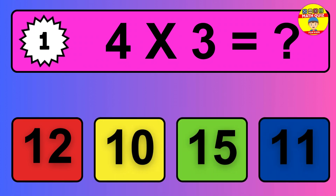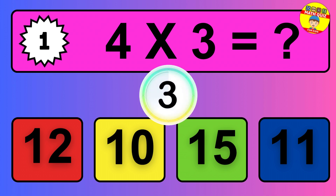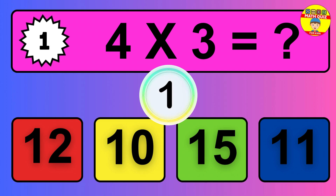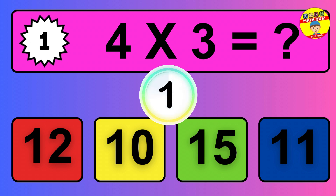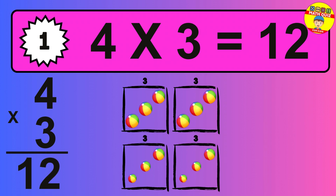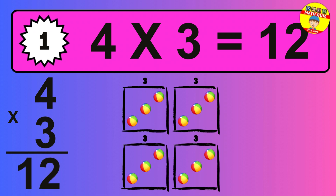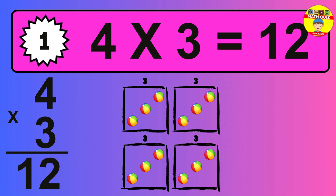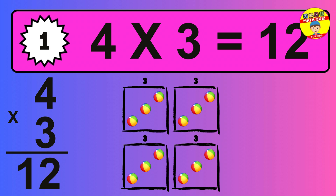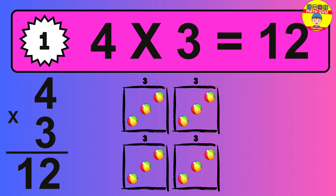Question one. Four times three equals what? So the answer is four times three is 12. To calculate, we have four groups with three balls each one. So how many balls do we have? 12 balls.